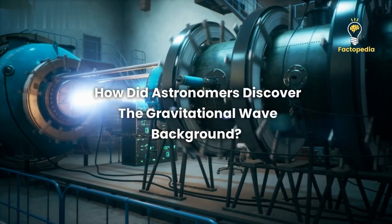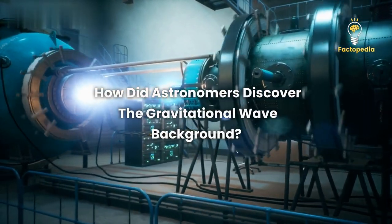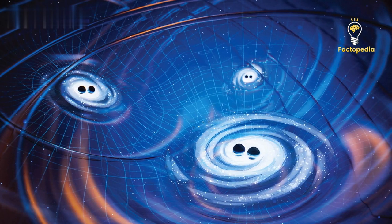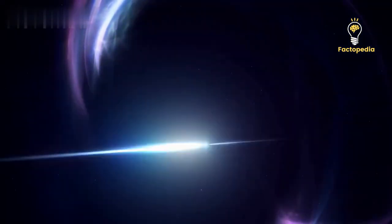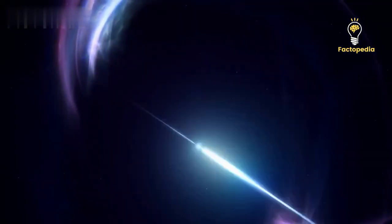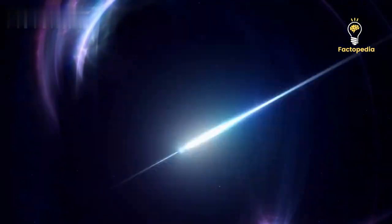So how did astronomers crack this puzzle and discover the gravitational wave background? Well, they found a brilliant solution by using pulsars as their messengers. Pulsars are these incredible cosmic lighthouses, highly magnetized neutron stars that emit beams of particles along their magnetic axes.